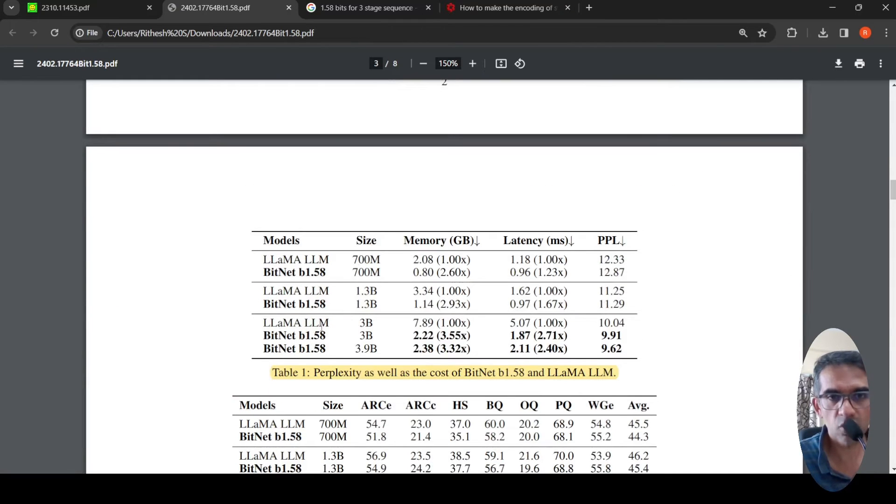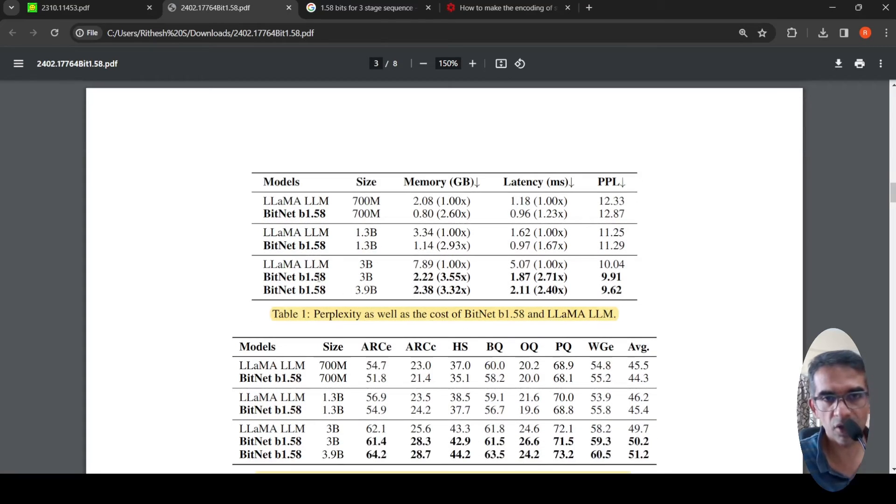For the same parameters. So they took a LLM which is 3 billion parameter and they took this BitNet B1.58 3 billion parameter model. And when they did a training of this B1.58 from scratch and compared it versus LLM, they say that the perplexity of this is lesser than that of LLM and you get this memory and latency improvements. Lower memory consumption and lower latency as well.